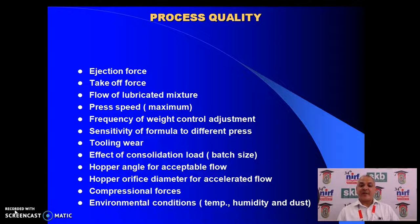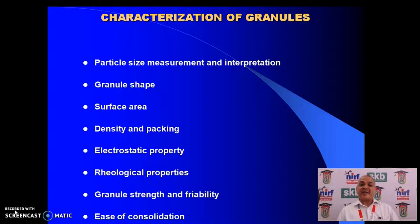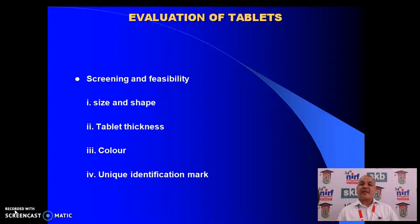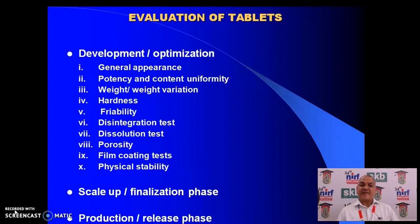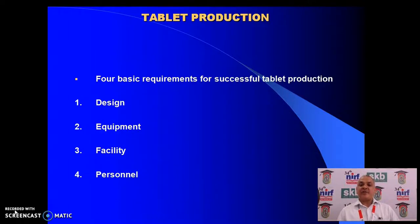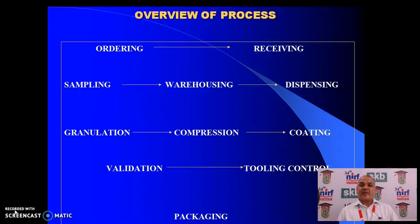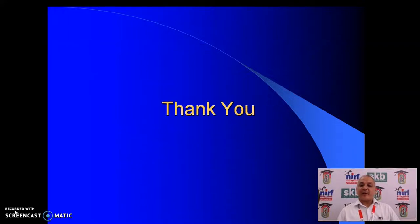Characterization of granules covers properties important for granule quality. Evaluation of tablets comprises screening and feasibility, development, optimization, and finally a scale-up and finalization phase leading to production. Tablet production comprises its design, equipment, facility, and personnel. This is the overview of the process of tablet formulation development. Thank you very much.